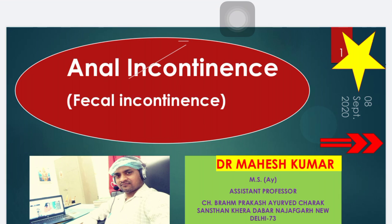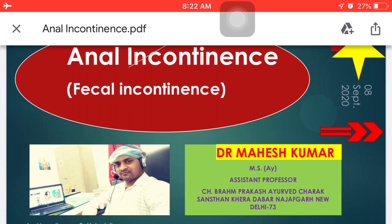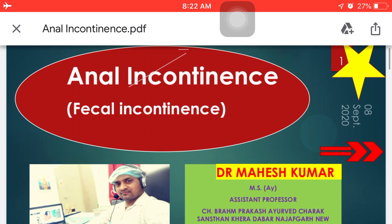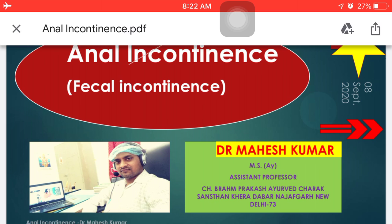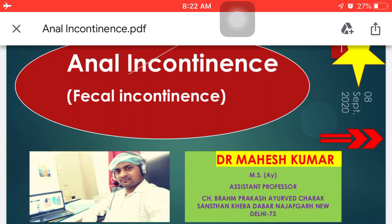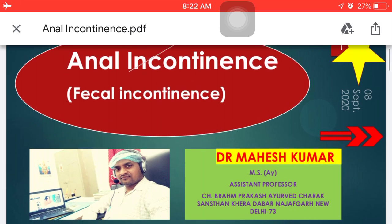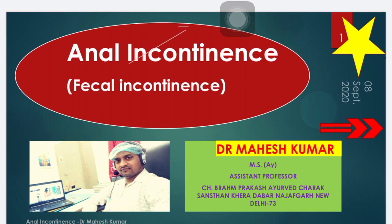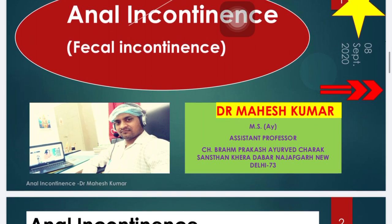There are three terms: anal, in, and continence. Anal means pertaining to anus, 'in' means not, and continence means to stop — meaning loss of self-control, especially of urine, feces, or semen. In contrast to anal continence, anal incontinence is the lack of control over defecation.